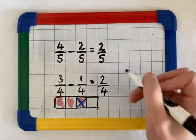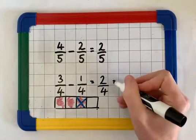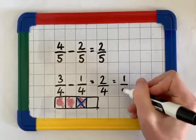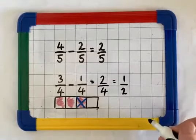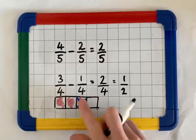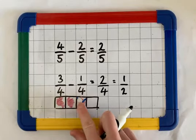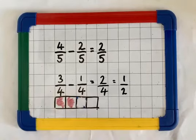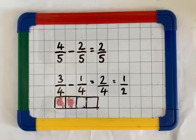For those of you who'd like to simplify that, take this a step further. That can be simplified to a half. Do you see you've got half of your whole here now selected? So it's a half.